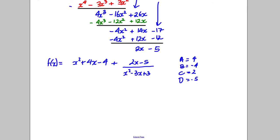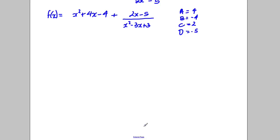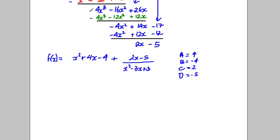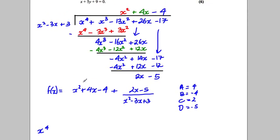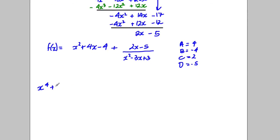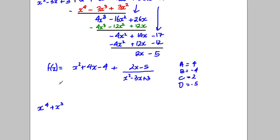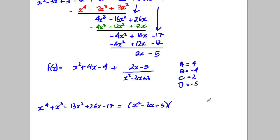One way I might do it — I'll try and do it very quickly, it's up to you to decide whether you like this way. I know that x⁴ + x³ − 13x² + 26x − 17 is going to equal the divisor x² − 3x + 3 multiplied by some quadratic, and then I'll get a remainder term. Let's think about what that quadratic needs to be.